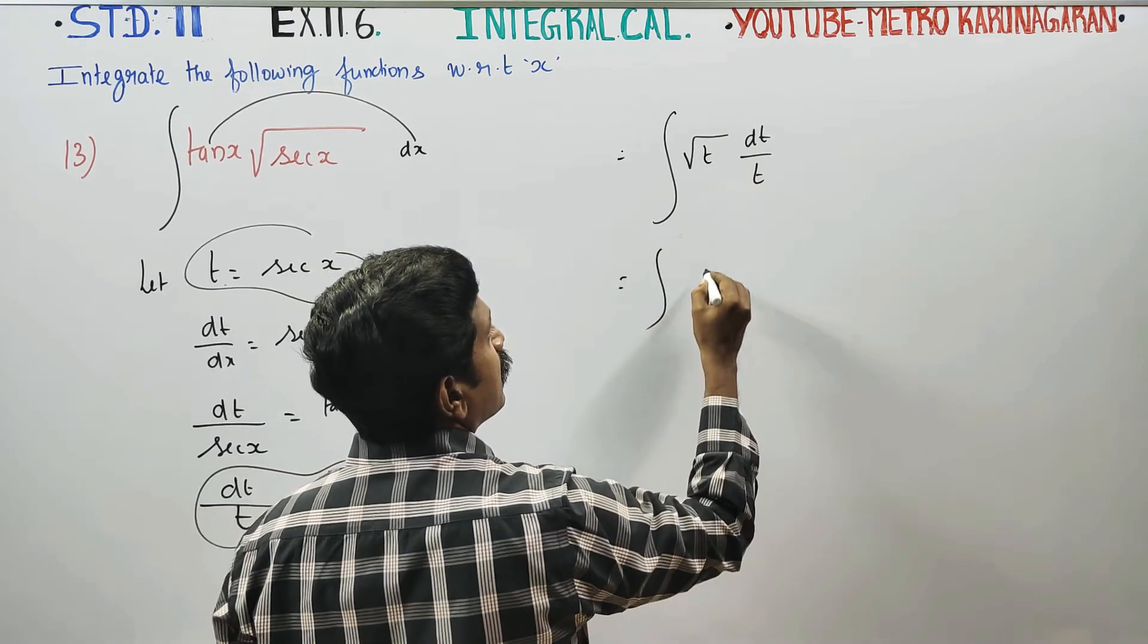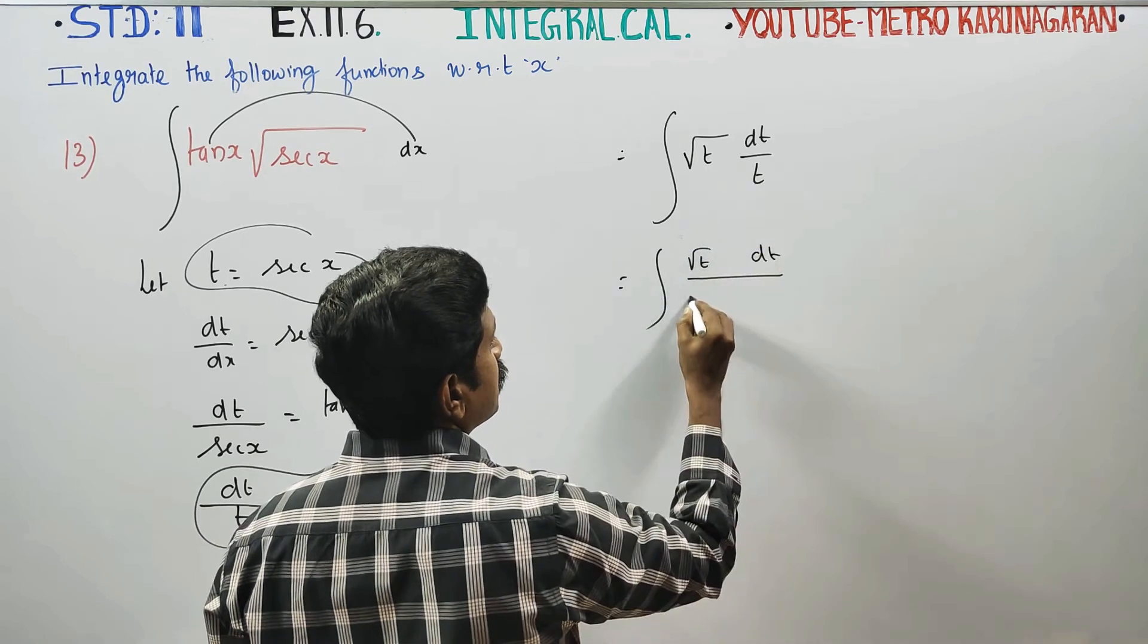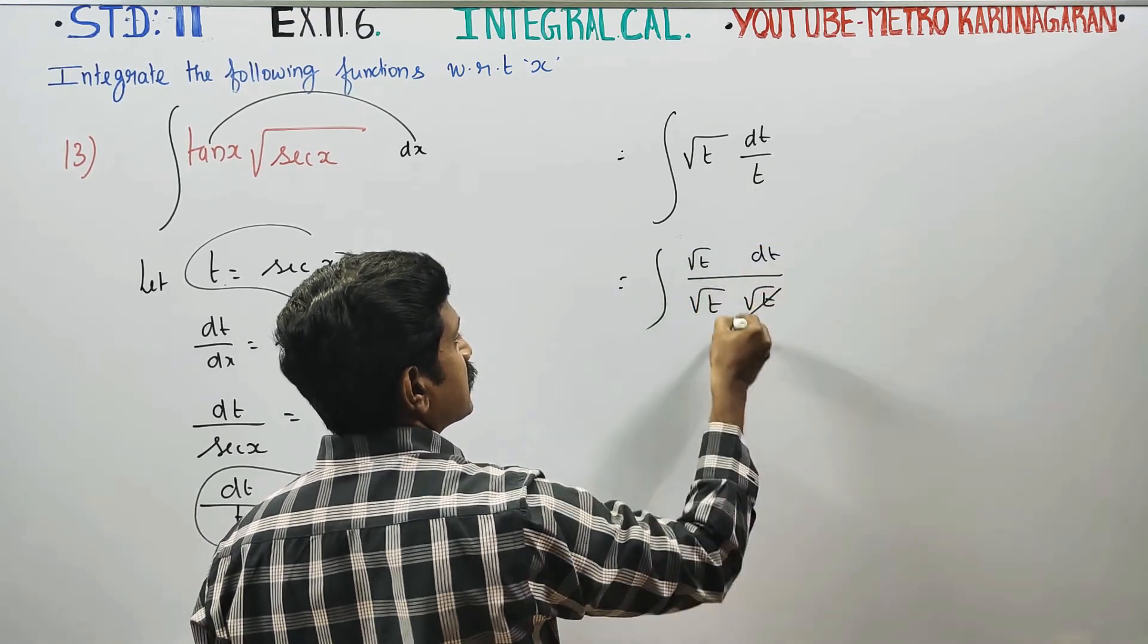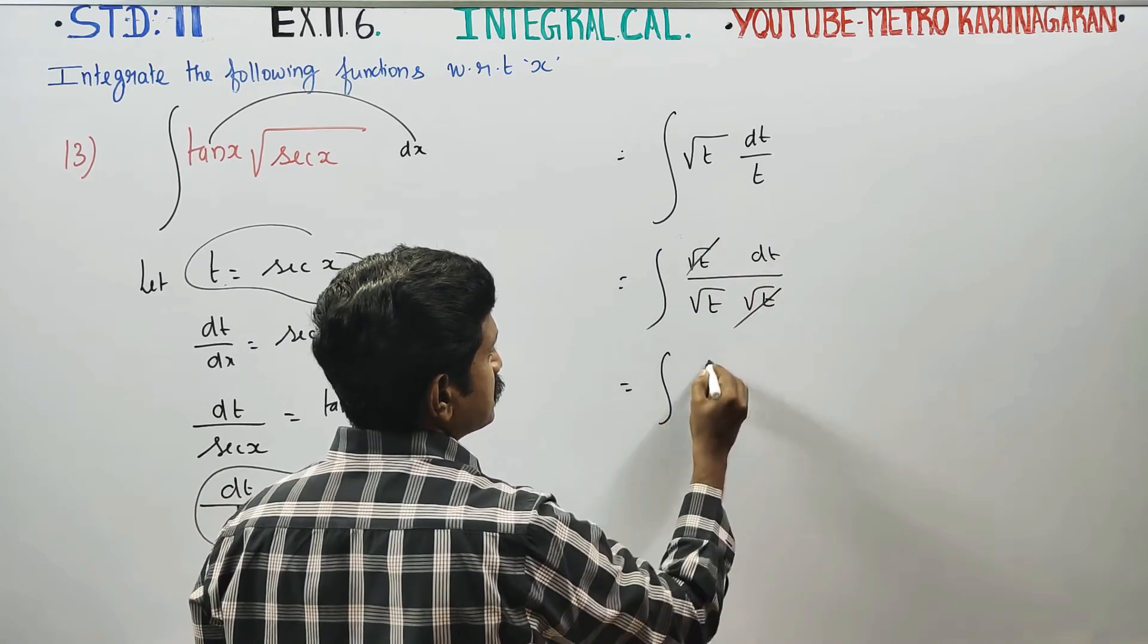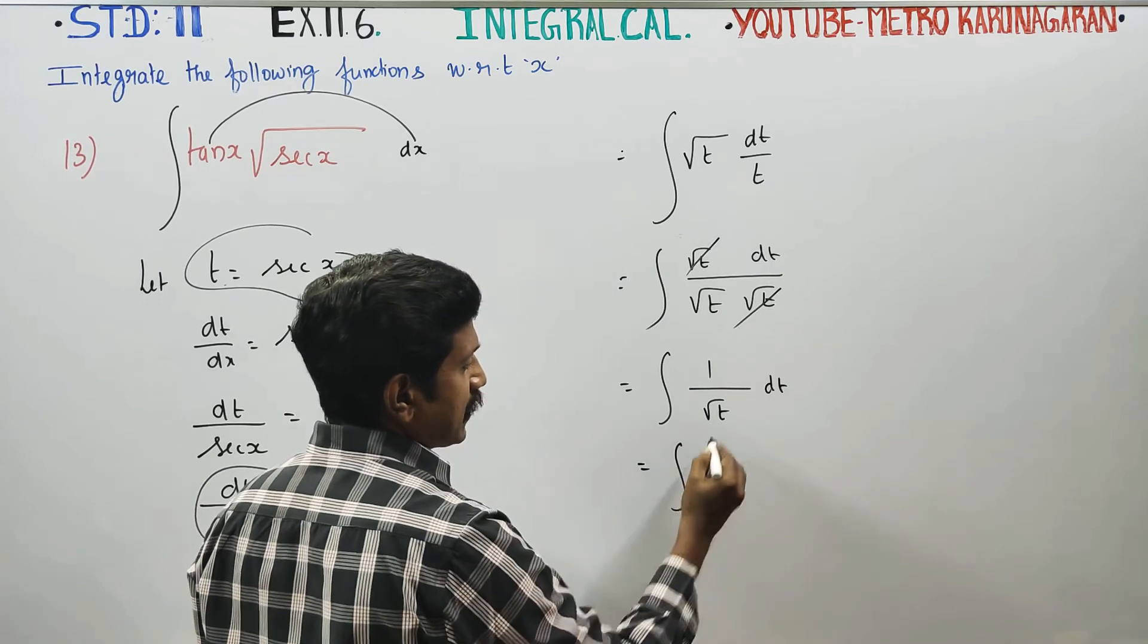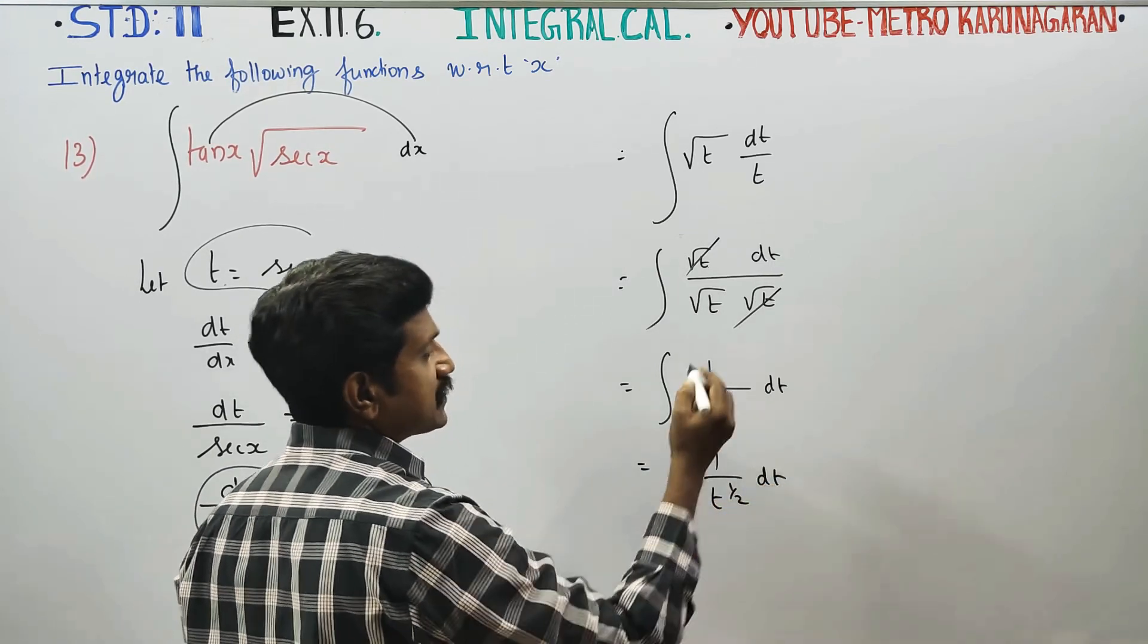So integration of root t dt. t can be written as root t into root t, which cancels. Integration of 1 by root t dt. Root t can be written as t power half dt.